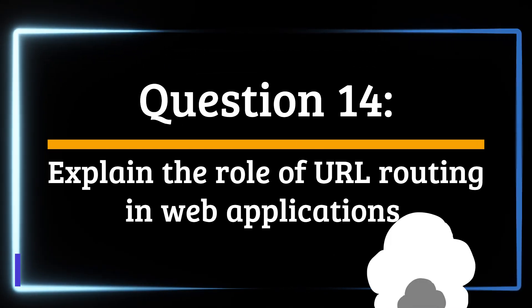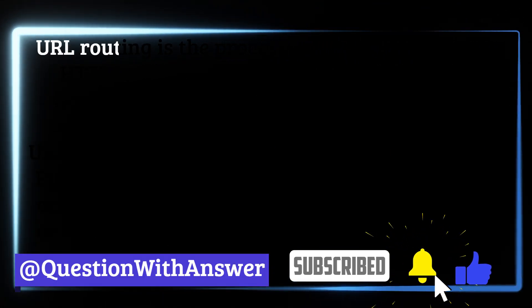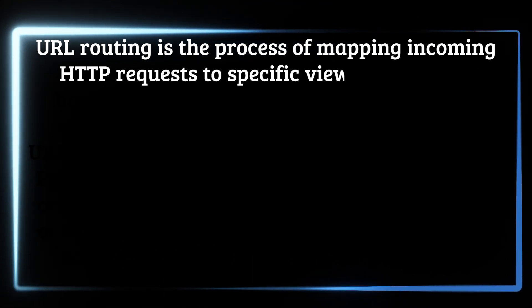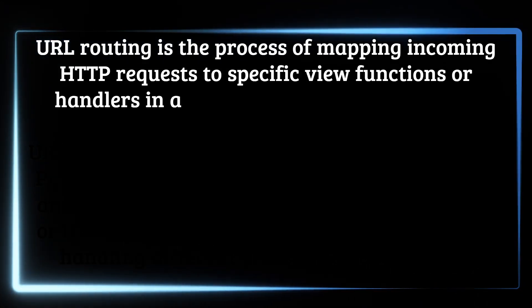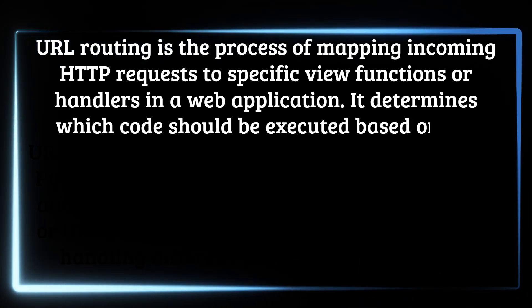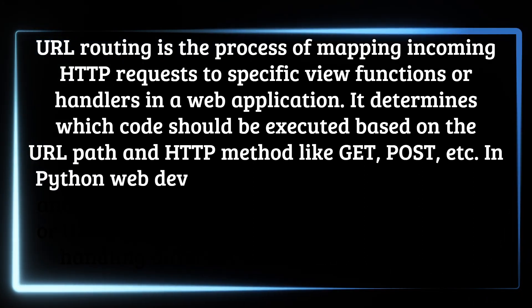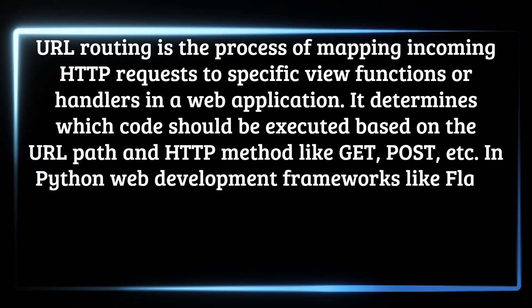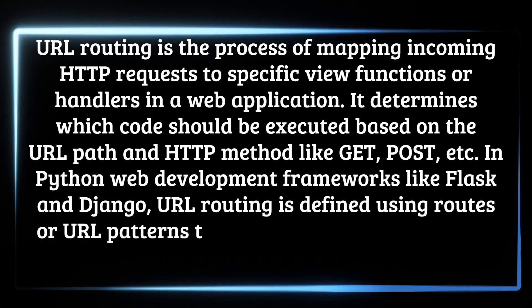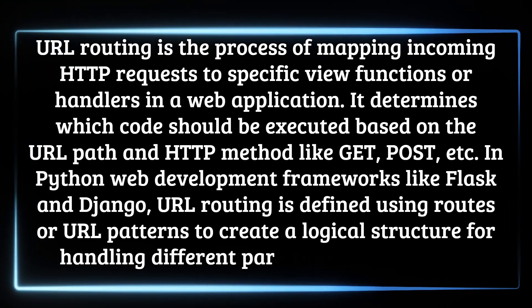Question 14: Explain the role of URL routing in web applications. URL routing is the process of mapping incoming HTTP requests to specific view functions or handlers in a web application. It determines which code should be executed based on the URL path and HTTP method, such as GET or POST. In Python web development frameworks like Flask and Django, URL routing is defined using routes or URL patterns to create a logical structure for handling different parts of the application.